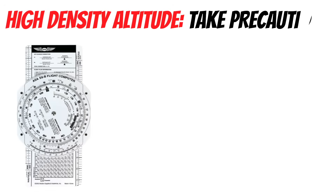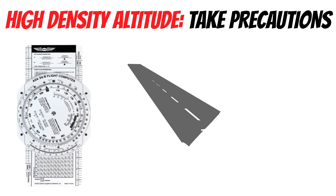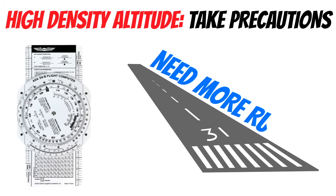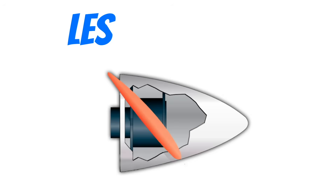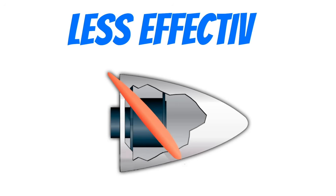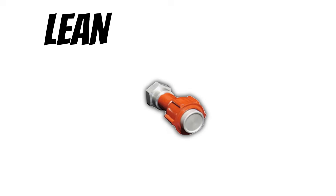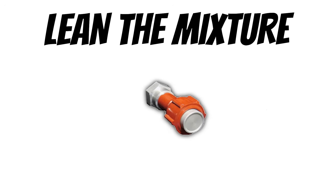It's important to calculate density altitude because if density altitude is high, you need to start taking some precautions. High density altitude means you're going to need more runway for takeoffs, the airplane is going to climb more slowly, and your landing distances are going to be longer. Your propeller is also going to be less efficient, which means you'll fly slower. For some airplanes, you might need to lean the mixture or take other precautions, so it's important to understand when you need to do that.